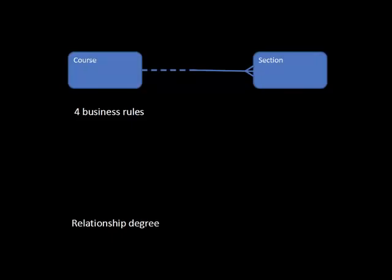Why are there four business rules? Upper and lower limit for each of the two entities. In this diagram, the lower limit for course is zero — a course can have zero sections. The upper limit for course is many — a course can have many sections. From the section side, lower limit is one, meaning a section must belong to some course. And a section must belong to only one course.